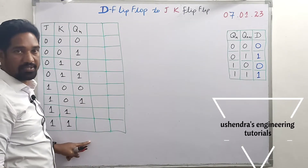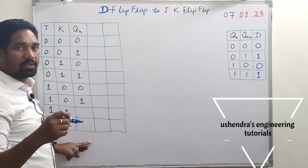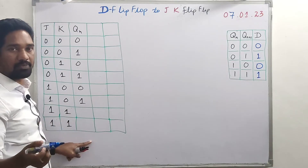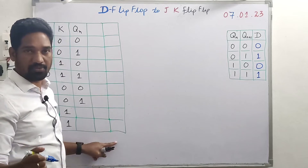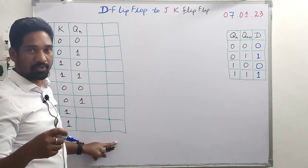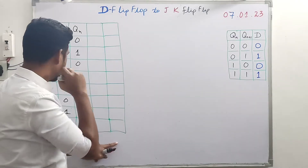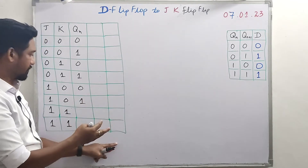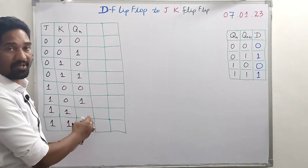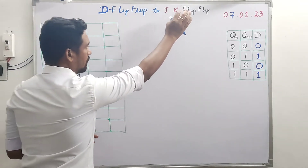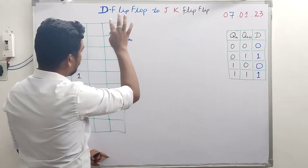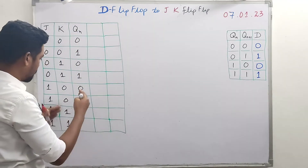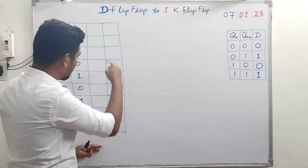It is suggested to learn the truth tables and excitation tables of all flip-flops, as they are very helpful in the conversion process and also when constructing registers and counters. For any flip-flop conversion, the tabular form includes the truth table and excitation table of the destination flip-flop, and the excitation table of the available flip-flop.